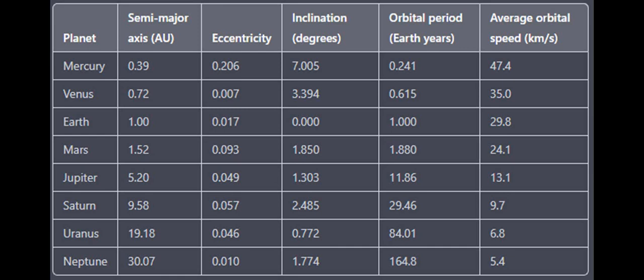There are several examples of strange and unusual orbits observed in our solar system and beyond. Here are a few examples. Highly eccentric orbits: some comets and asteroids have highly elliptical orbits that bring them very close to the Sun at perihelion and take them far out into the outer reaches of the solar system at aphelion.